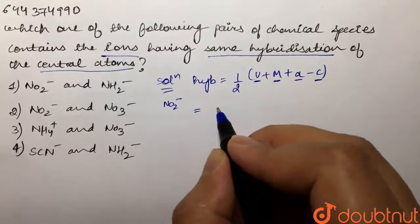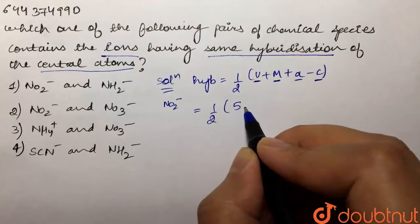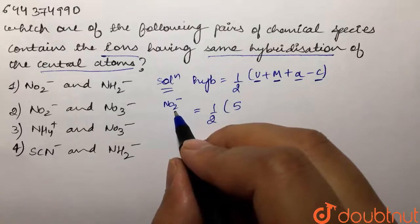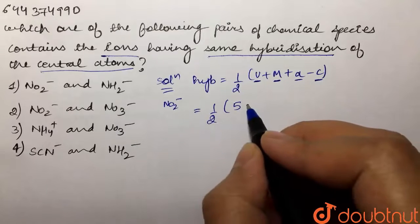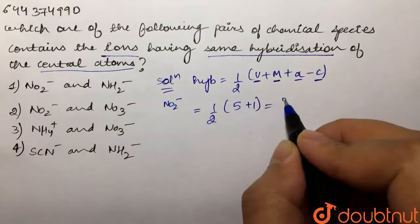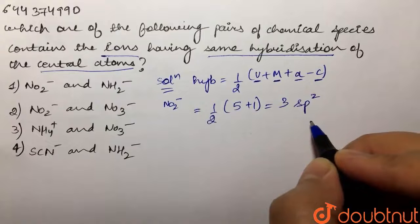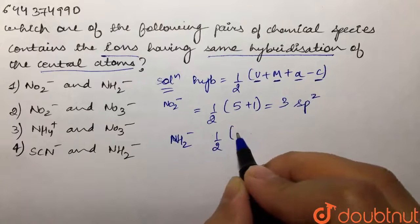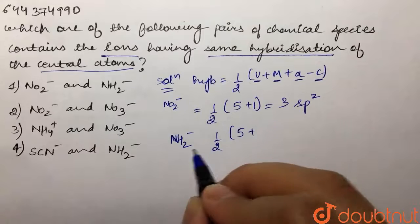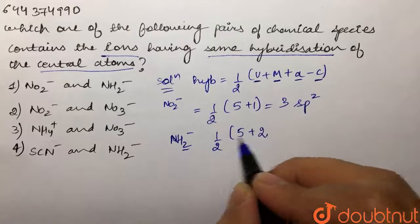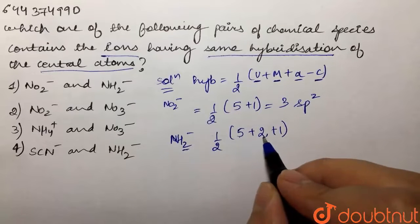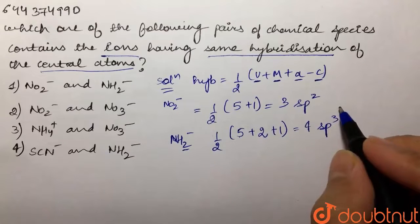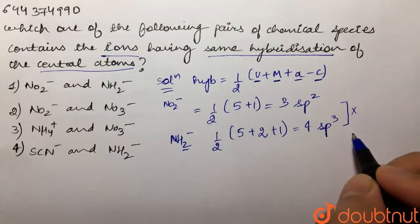For Option 1, we have NO₂⁻. Nitrogen is the central atom with five valence electrons. No monovalent atoms are attached, so we add the charge: (5 + 1) / 2 = 3, meaning sp2 hybridization. For NH₂⁻, nitrogen has five valence electrons plus two monovalent atoms plus the charge: (5 + 2 + 1) / 2 = 4, meaning sp3 hybridization. They do not have the same hybridization, so this is not the correct option.